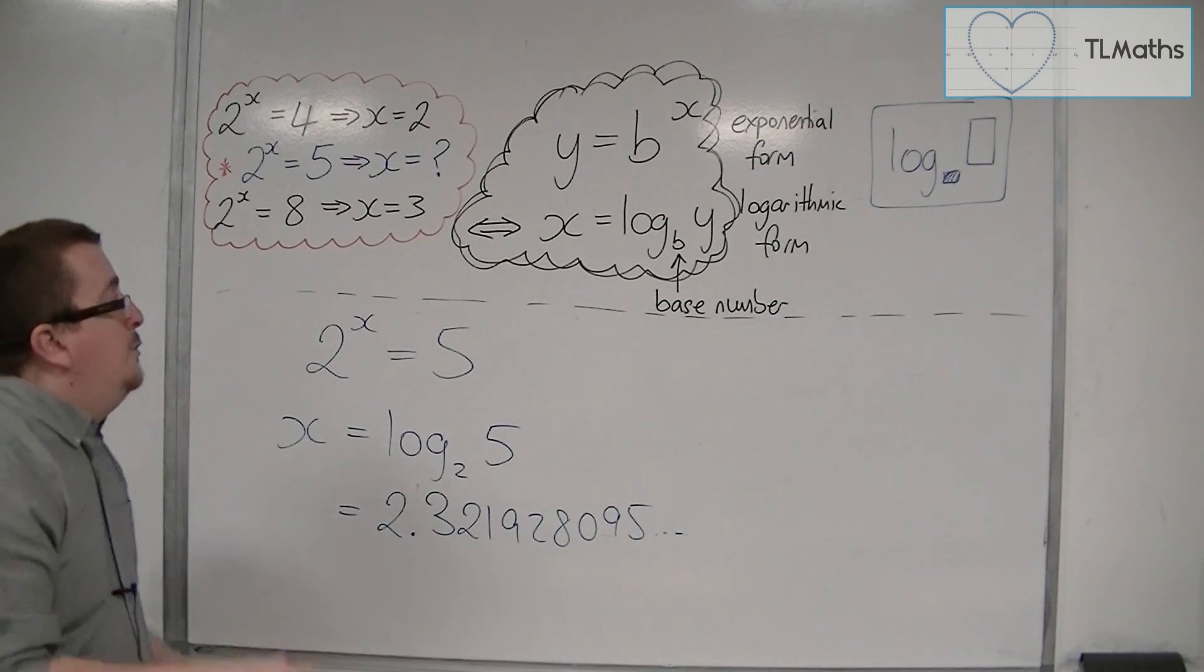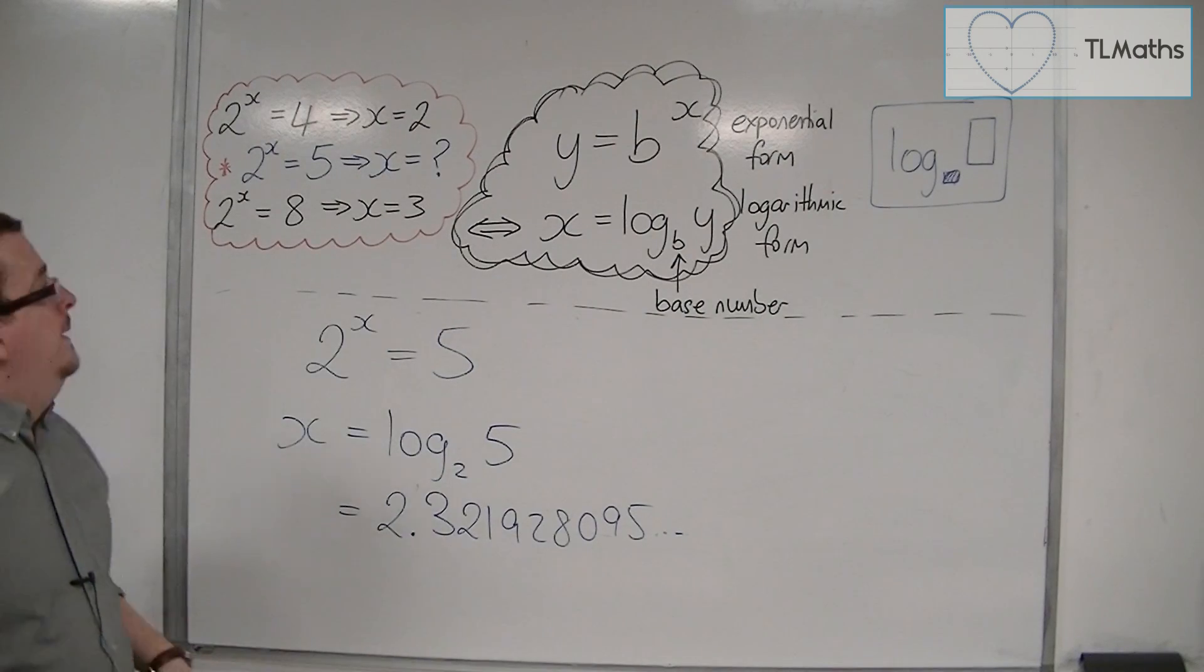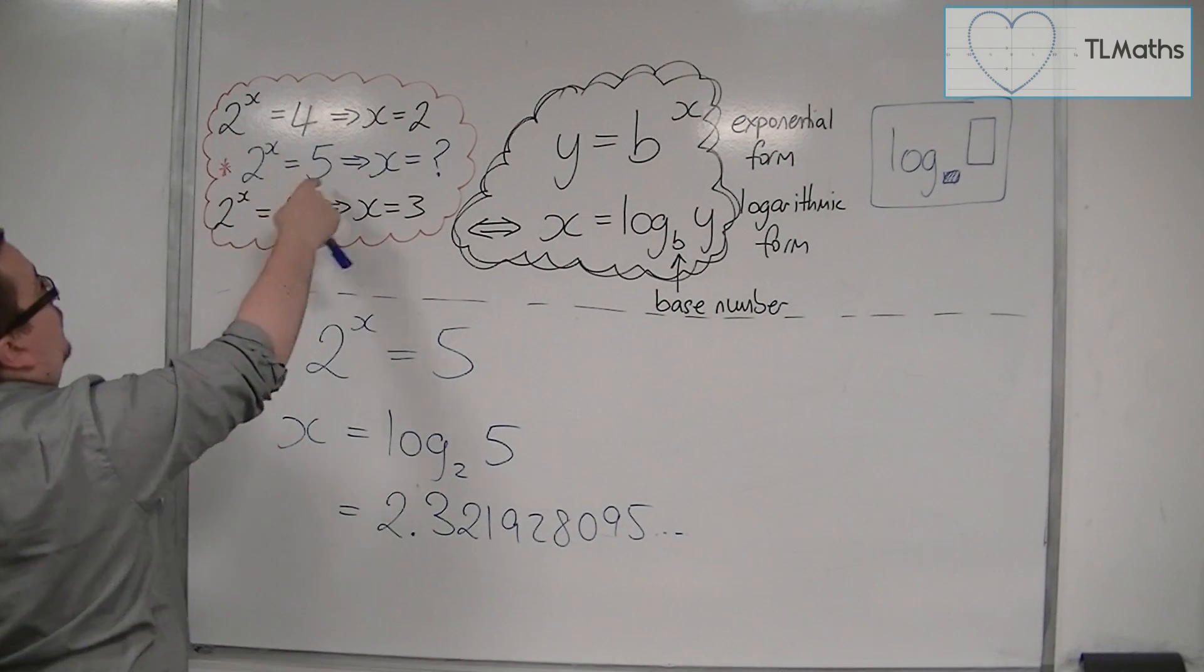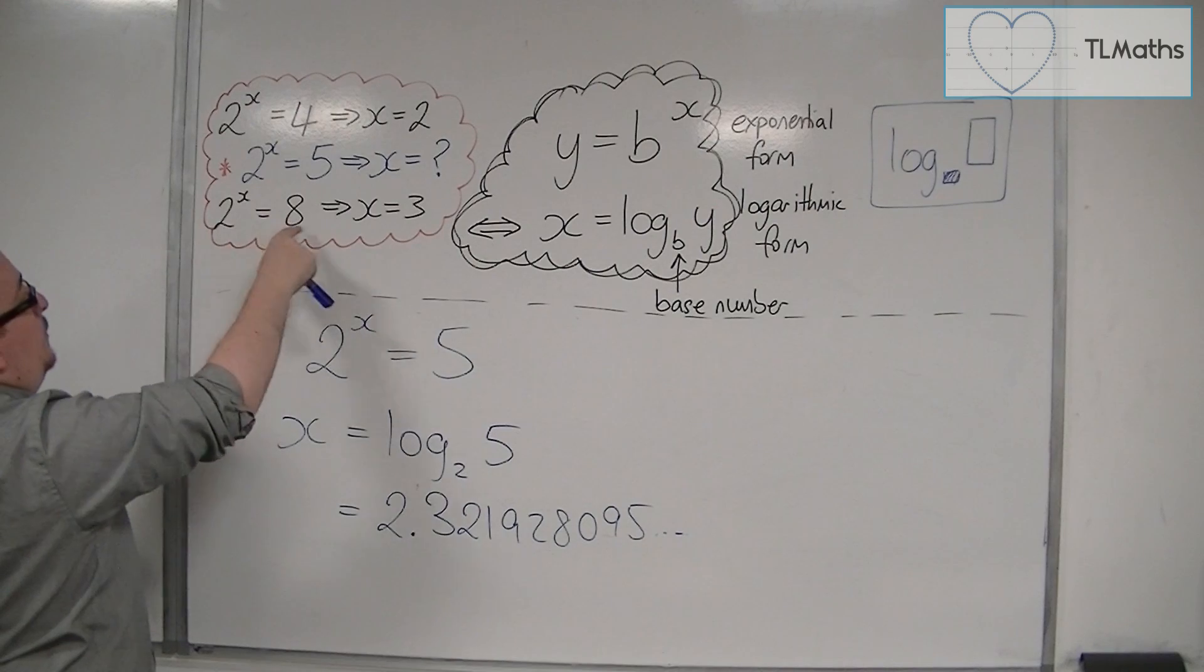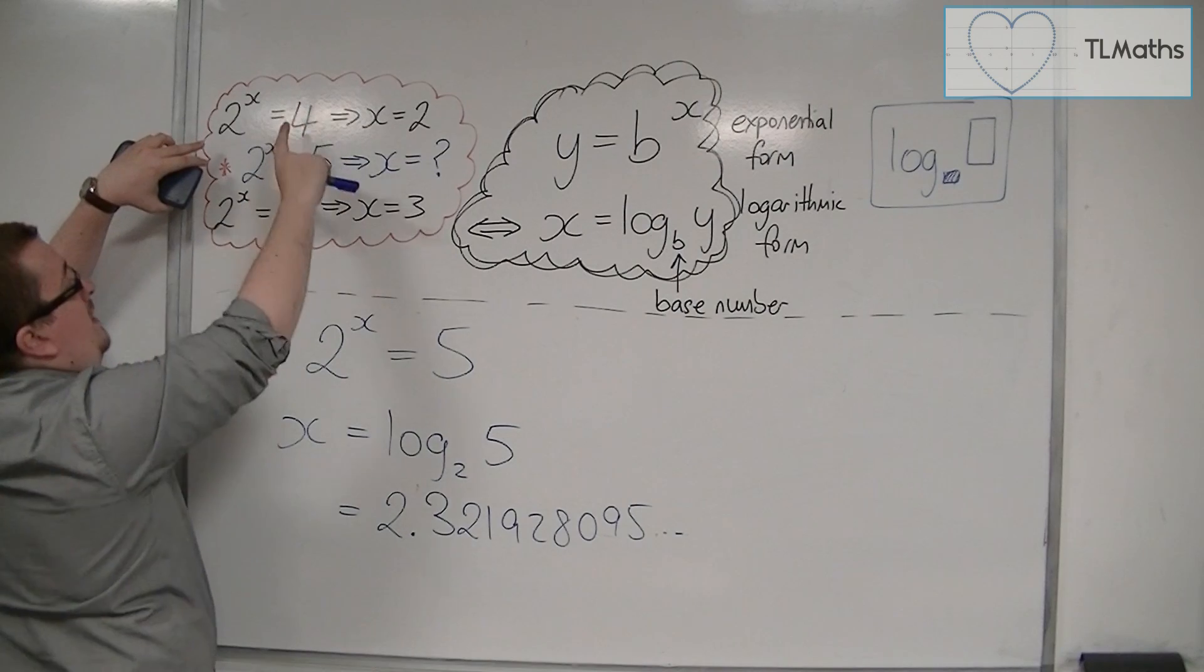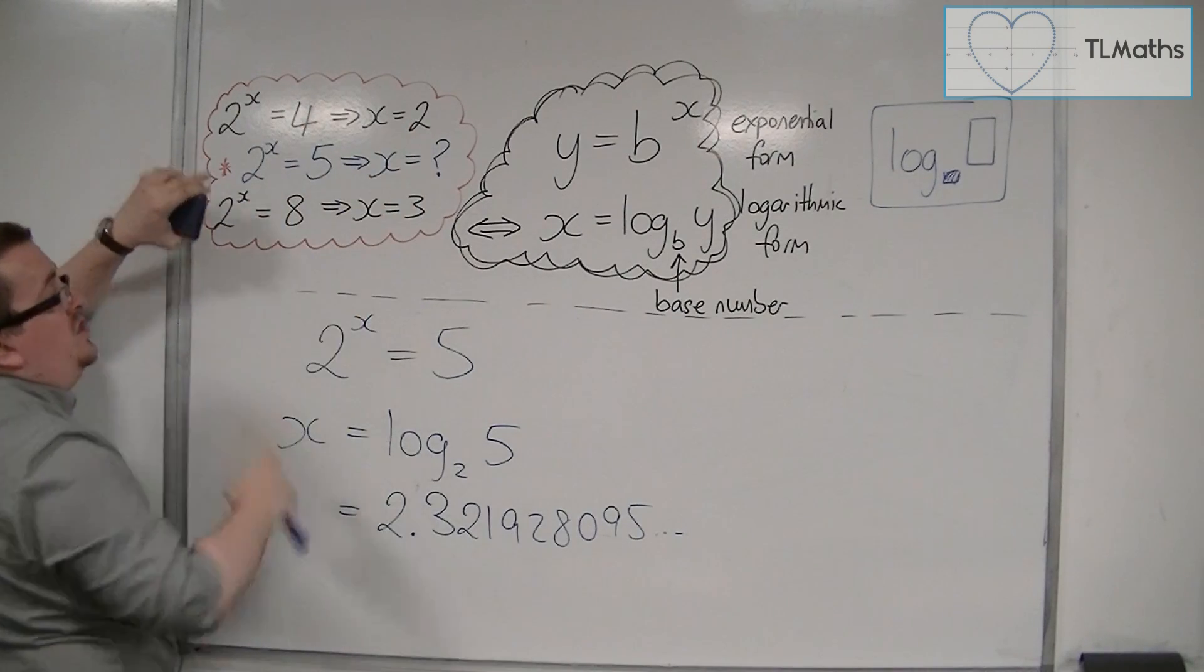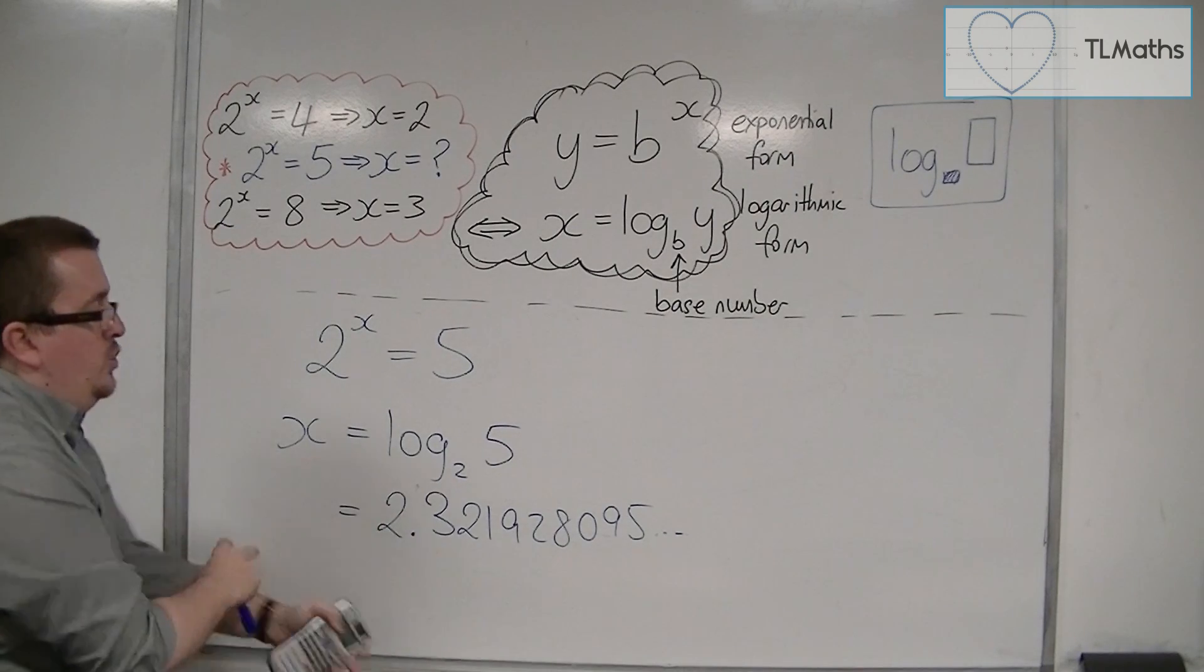Now it should be no surprise that this number is between 2 and 3. Here we saw that 2 to the x is 4, or x had to be 2. 2 to the x equals 8, x is 3. When I'm looking at 2 to the x as a value between 4 and 8, I should find an x value that is between 2 and 3, which it is.